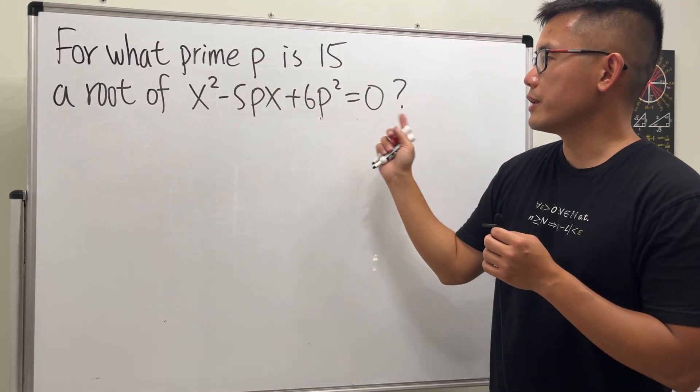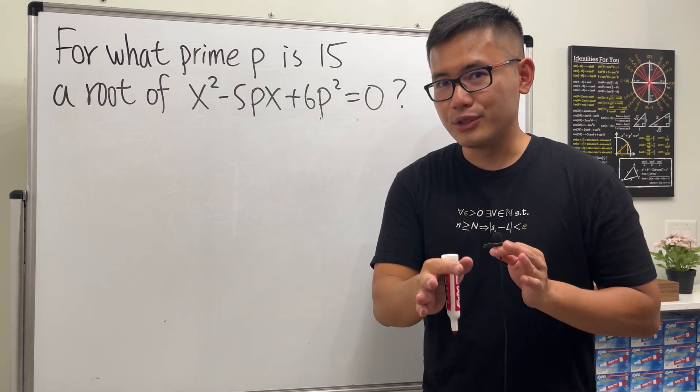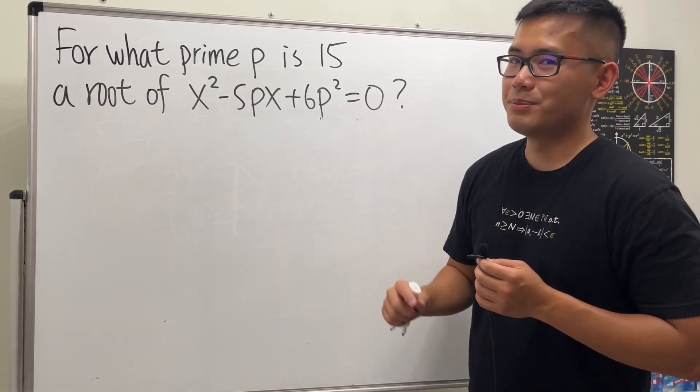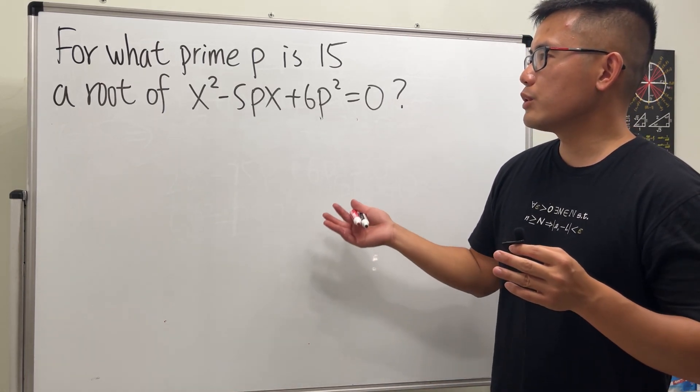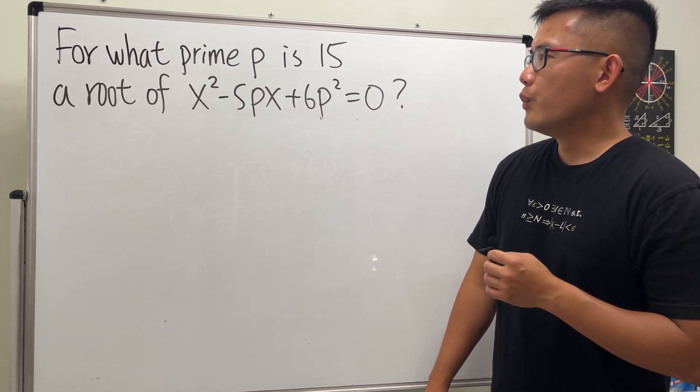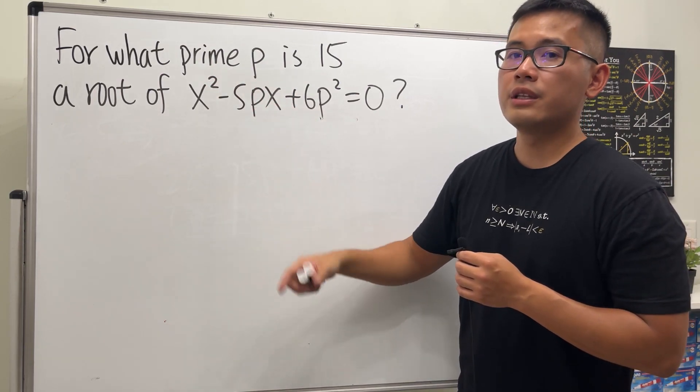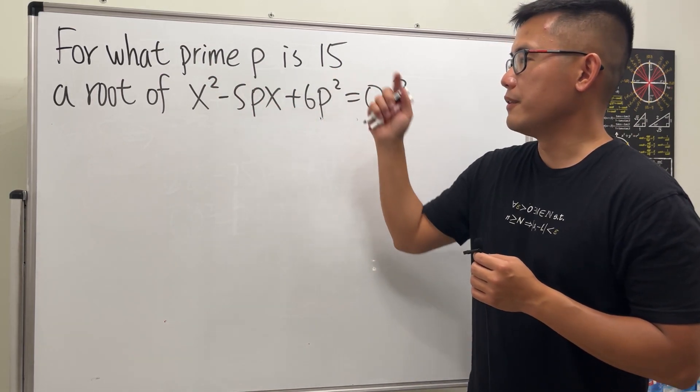I don't want to say too much yet. Just go ahead and pause the video and try this first before we continue. Done? Alright, so let me just illustrate what the question is trying to say. We are trying to find out what P makes this equation have 15 as an answer.